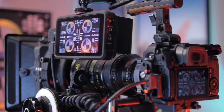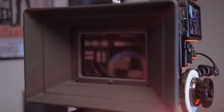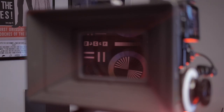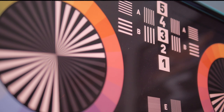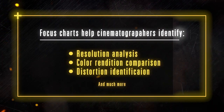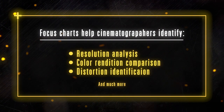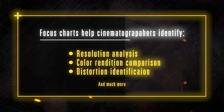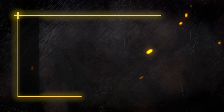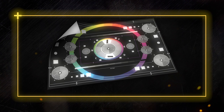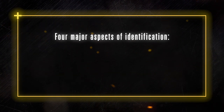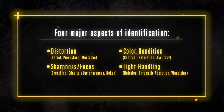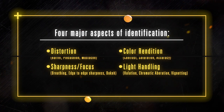Focus charts allow cinematographers, filmmakers, and gearheads alike to uncover the technical intricacies within their own camera lenses and cameras. Focus charts are a must when it comes to resolution analysis, color rendition, comparison, distortion identification, and more. You can use a focus chart in many different ways, but cinematographers will use them in identifying four major aspects of a lens or camera: distortion, color rendition, sharpness and focus, and light handling.